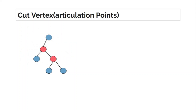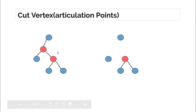Cut vertices or articulation points: here you can see this forms a single connected component. The nodes which, when removed along with their edges, increase the number of connected components are articulation points. There are two such nodes marked in red. As you can see, I have removed this node and the number of connected components increased — initially there was one, now there are three. If you remove one of the other nodes, the total number of connected components remains one. So those four nodes do not belong to articulation points.